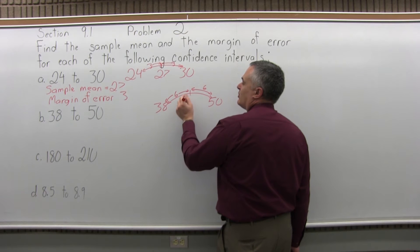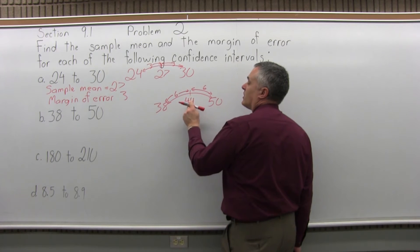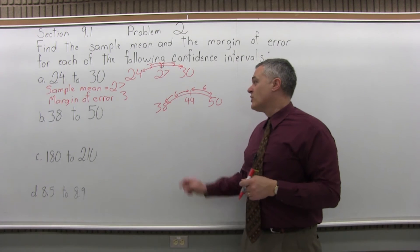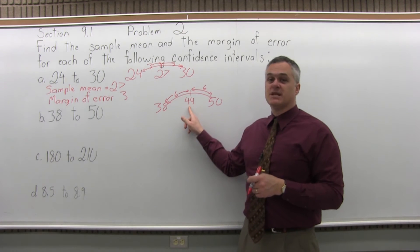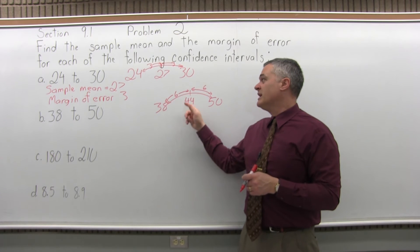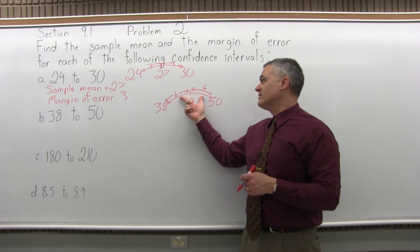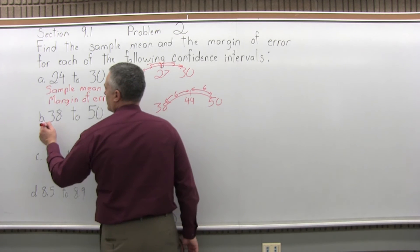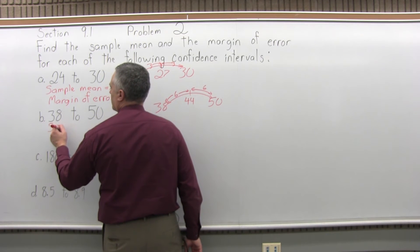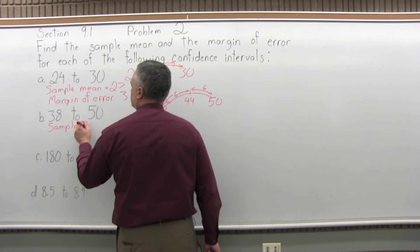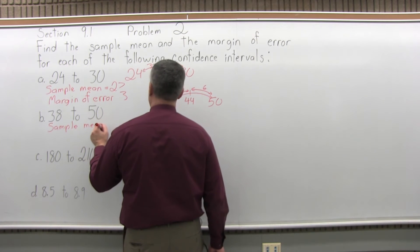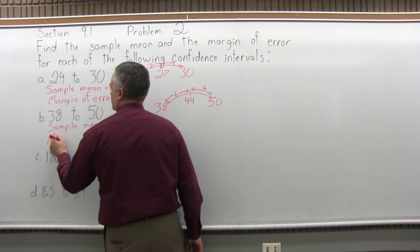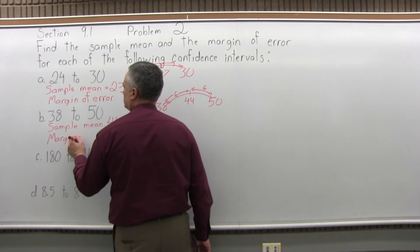So 38 plus 6 more would put 44 in the middle, 44 plus 6 more would bring you up to 50. So 44 is the midpoint, that must have been the sample mean of the confidence interval. And that distance from end to end from the midpoint of 6 will be your margin of error. So sample mean was 44, margin of error 6.